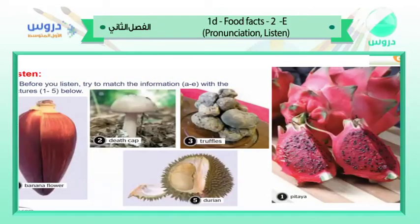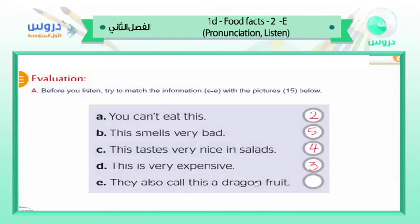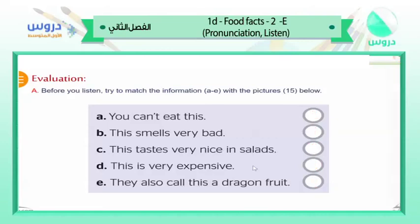E — 'they also call this a dragon fruit.' Which one? Excellent — number one, pitaya. So E goes with number one. Very nice, excellent. Now part B — listen and check your answers.